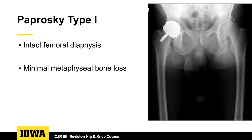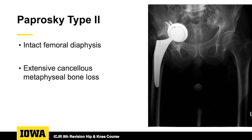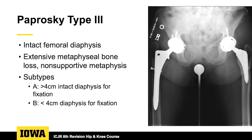In cases like you see here, occasionally with smaller proximal-coated stems, you'll have a Paprosky type 1 femur. Type 2: these patients again have an intact femoral diaphysis with a little more cancellous metaphyseal bone loss — you're starting to think more about getting distal fixation. For type 3, which is broken down into subtypes A and B, the bone loss starts to extend into the diaphysis.